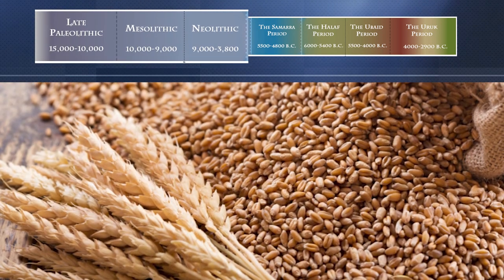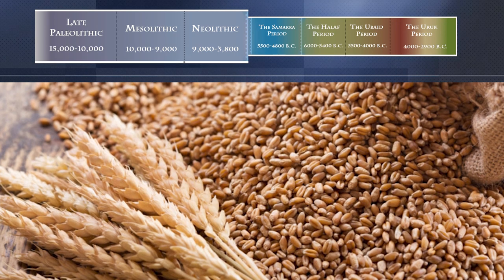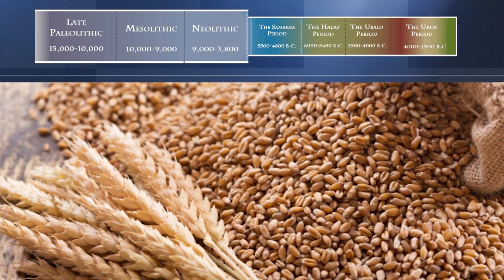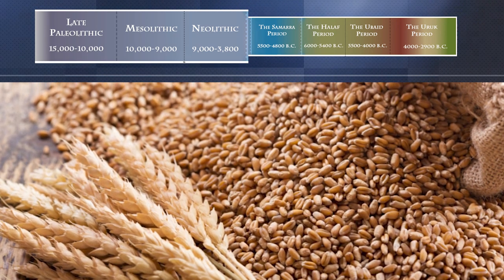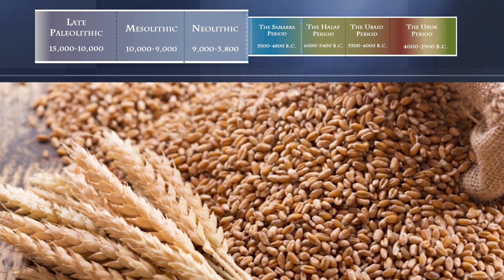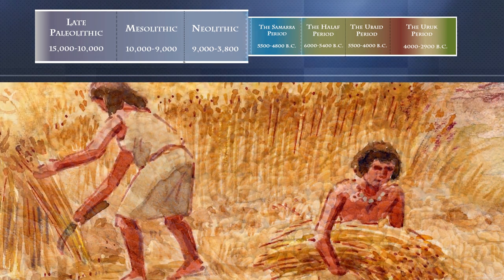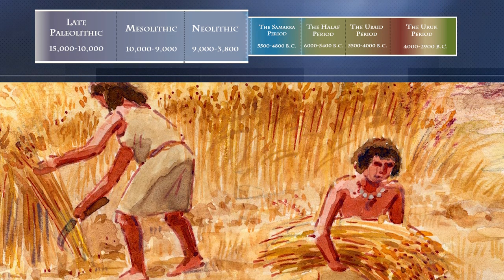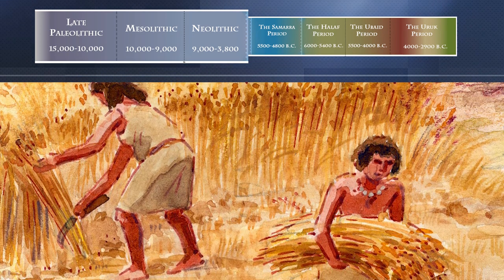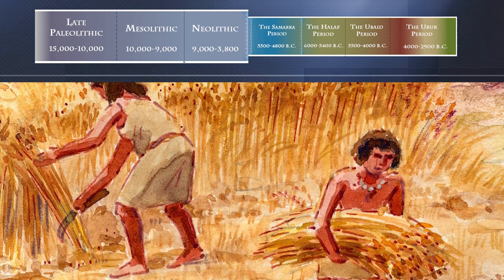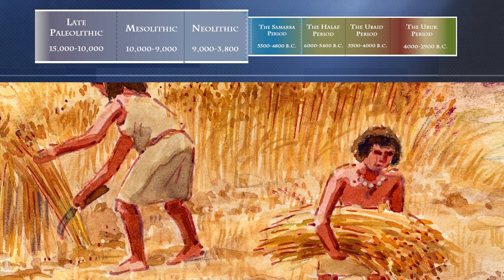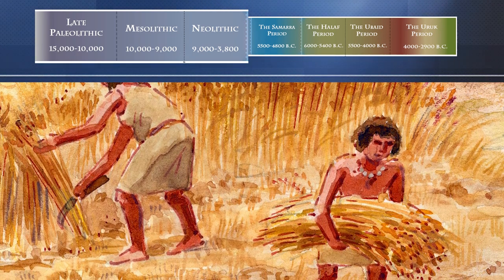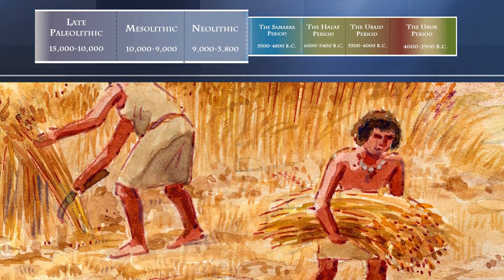Wild cereals have weak stems that allow their seeds to easily disperse and fall to the ground before they can be harvested. They also have strong husks that protect the seed from premature germination. These early people developed these wild grains into the bread wheats we have today through selection and crossbreeding with wild grasses. But again, this took time.